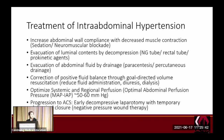Controversially, abdominal perfusion pressure — calculated as MAP minus intra-abdominal pressure — can be used as a resuscitation target. In the literature, the optimum abdominal perfusion pressure is 50 to 60 mmHg, though this remains controversial.